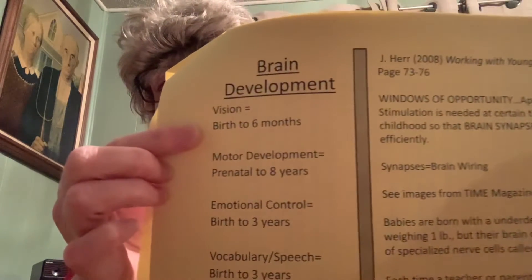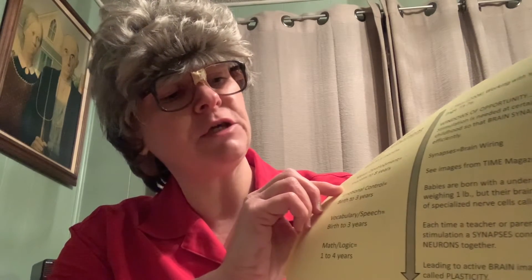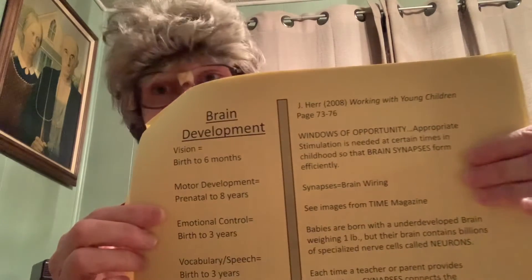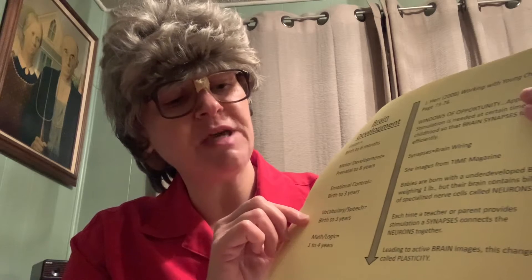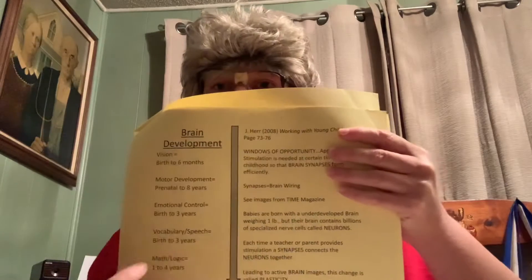Brain development begins at birth. Vision is being set up from birth to six months. Motor development spans prenatal through eight years and includes gross motor and fine motor. Emotional control is formed from birth through three years. Vocabulary and speech is established birth to three years. Math and logical thinking is one to four years of age. These are when the foundations are being formed in the brain, which is why early childhood education is so important — before preschool there's already brain development and synapses forming.